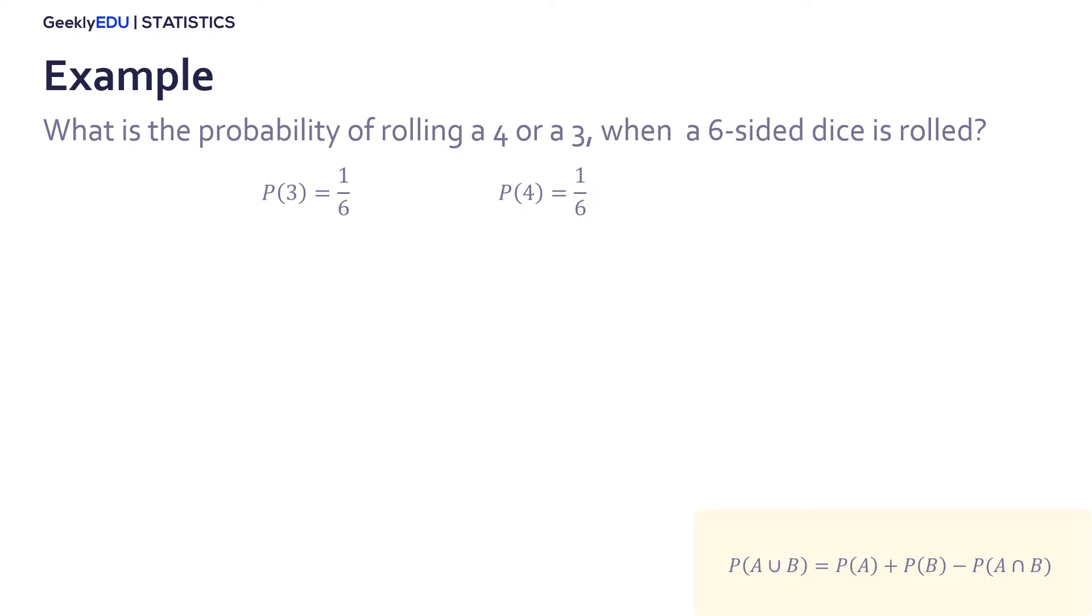Then the probability is 1 sixth. The simultaneous occurrence is equal to 0 because the dice can give us only one number at a time. Substituting in the formula, we get that the probability of 3 union 4 is equal to 1 third.